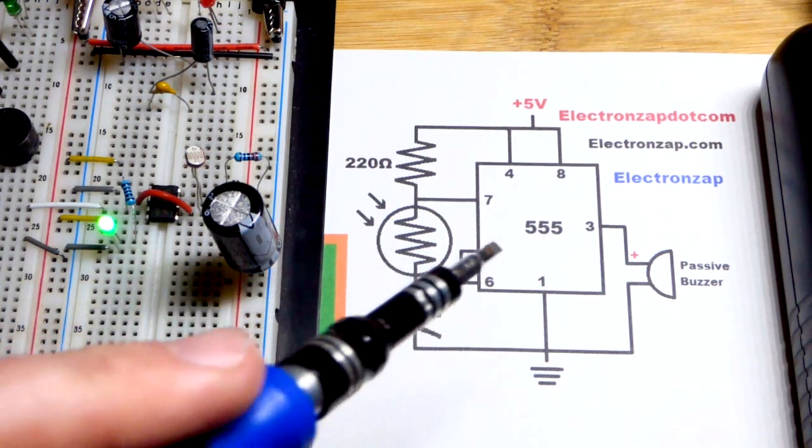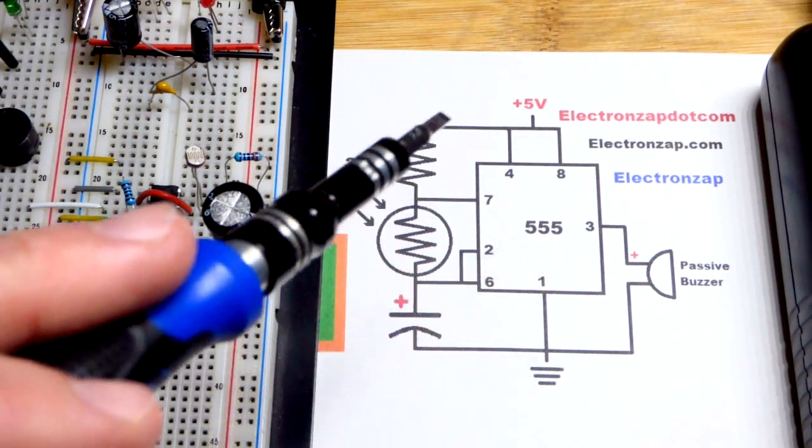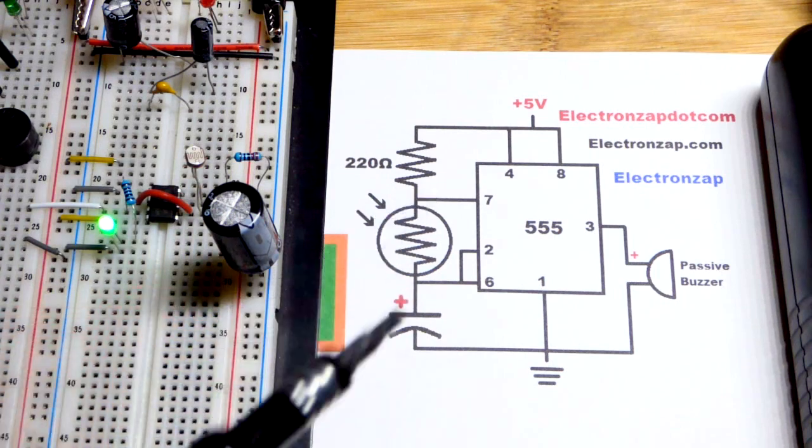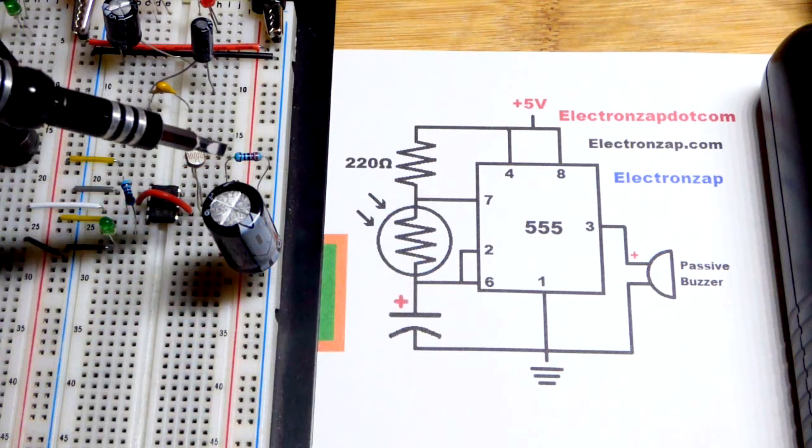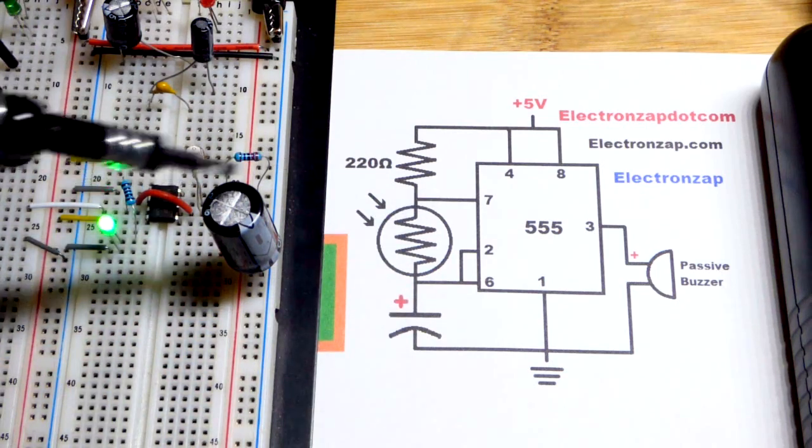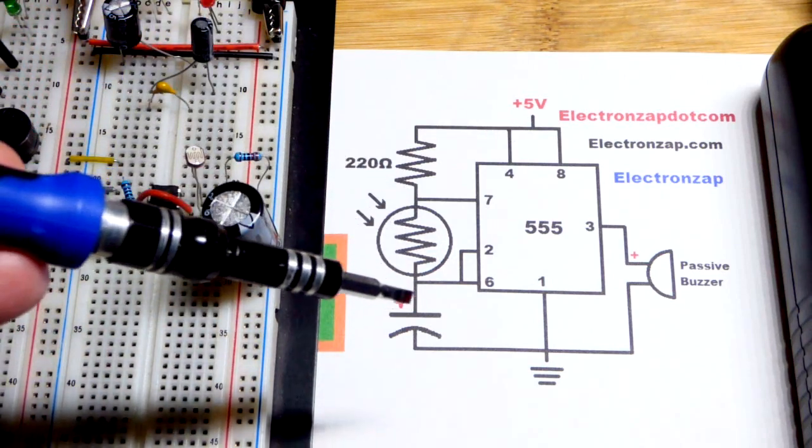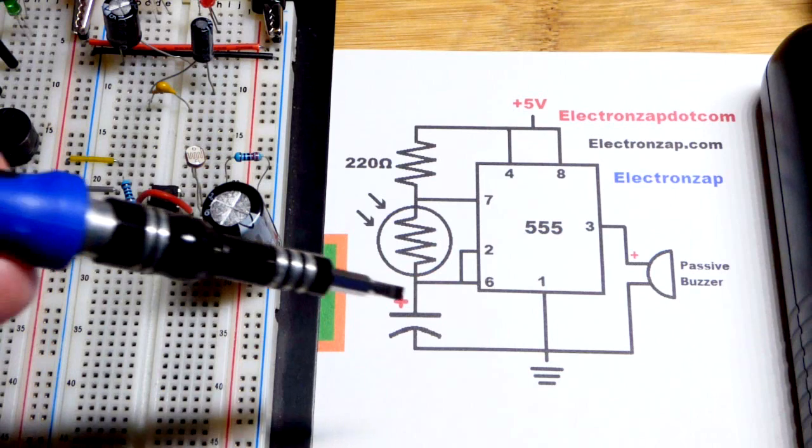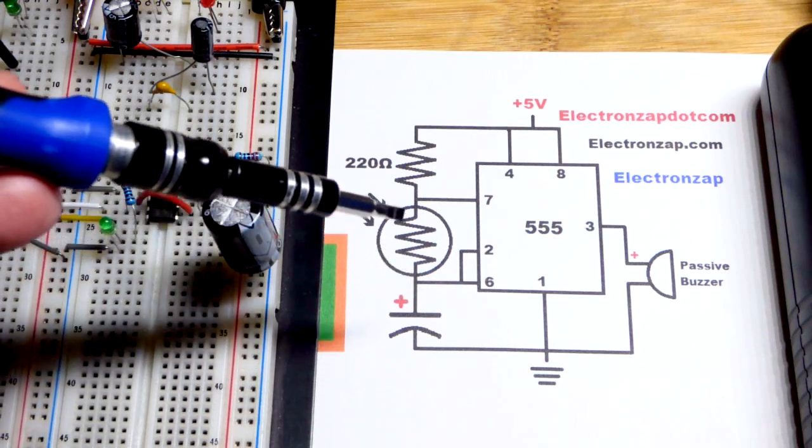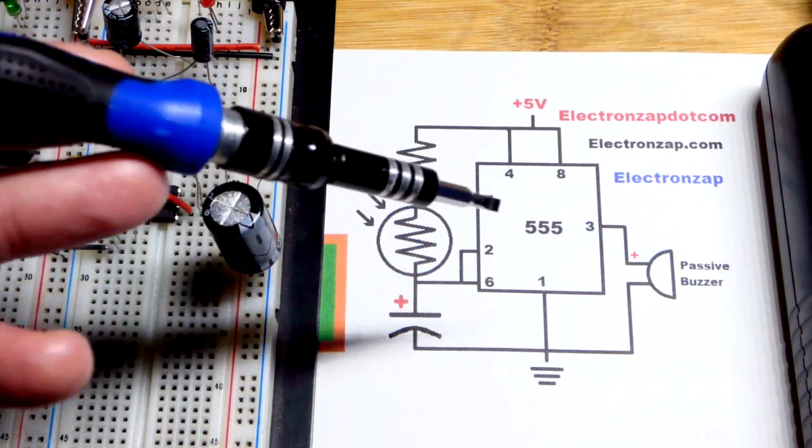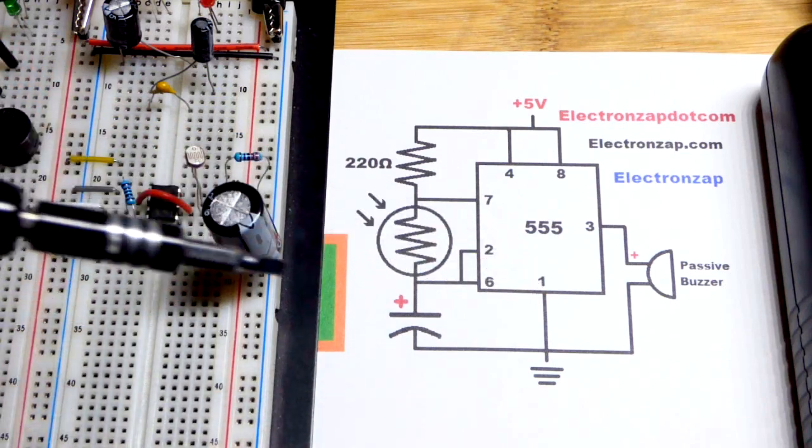We're going to come back to the 555 timer wired in astable mode right there. I have a 220 ohm resistor and then a light dependent resistor that charges a capacitor. Once it gets to two thirds of the supply voltage it discharges through the light dependent resistor to pin 7 which goes to ground.